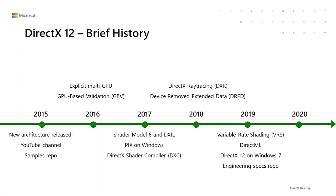We also invested heavily in tooling and shader compilers. For example, we built PIX on Windows, the most full-featured graphics debugging and profiling tool. And DXC is Microsoft's open-source compiler for HLSL, the most popular shading language for GPUs. We will talk more about these two areas later today. With the power of the DirectX 12 API, game developers brought incredible visuals and great innovations to hundreds of video games for both PC gamers on Windows and console gamers on Xbox.